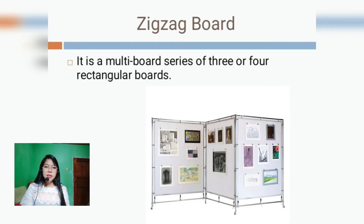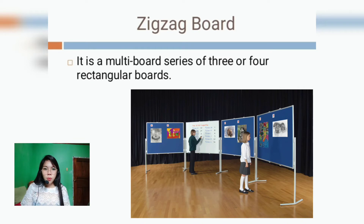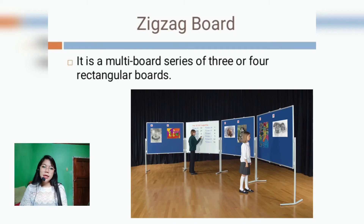The zigzag board is a multi-board series of three or four rectangular boards joined together along the sides with hangs, so that they can be easily folded up and carried. Each board can be of a different type — for example, a whiteboard, a chalkboard, a flannel board, and so on. The size of the boards for the zigzag multi-board depends on what you want to use them for.